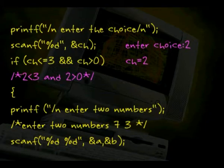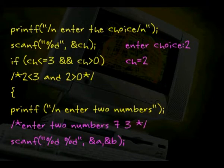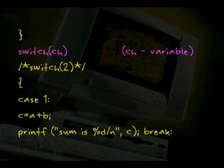If it is so, then accept the numbers from the keyboard, printf enter 2 numbers, I am entering to number 7 and 3 using the scanf statement and that is assigned to a and b. Then I am closing the if construct. The if statement ends here.